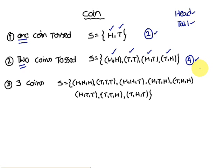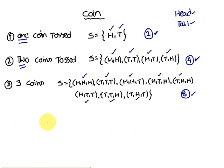Now if we toss three coins, we get all heads, all tails, first two heads and third tail, and so on. How many elements are there? Total eight elements. So: one coin gives two elements, two coins give four, three coins give eight.